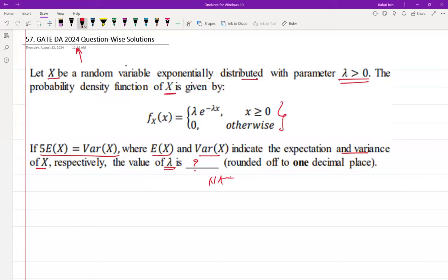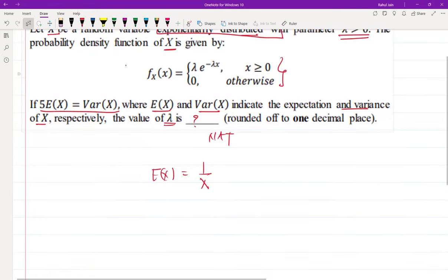Let's try to solve it. In exponential distribution, the expectation E(X) is equal to 1 by lambda. The variance is equal to sigma square, and we can write it like 1 by lambda square.